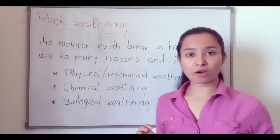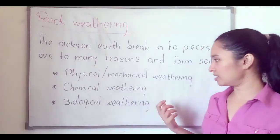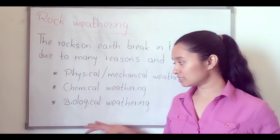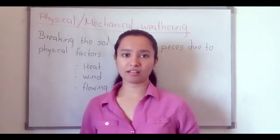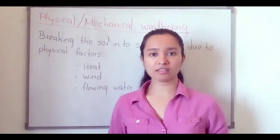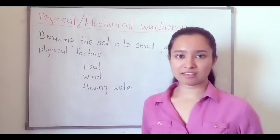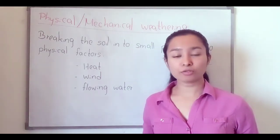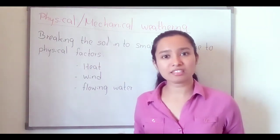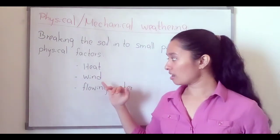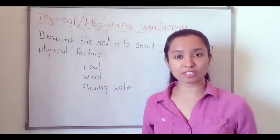There are three ways of rock weathering. The first one is physical or mechanical weathering. The second one is chemical weathering. And the third one is biological weathering. Physical or mechanical weathering means breaking the rocks into small pieces due to physical factors such as heat, wind, or water.